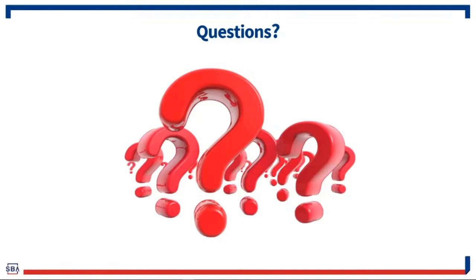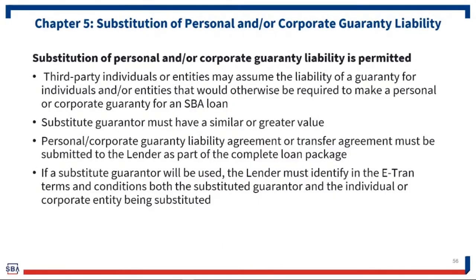This is new for origination. It's common in servicing that when a borrower sells a business or someone leaves, we substitute guarantors. But this is the first time we've had the opportunity for lenders in originating loans to consider third parties that are not required to guarantee the loan to substitute for one of the required guarantors. One of the questions that came in — and it must be coming from a lawyer — is about consideration.